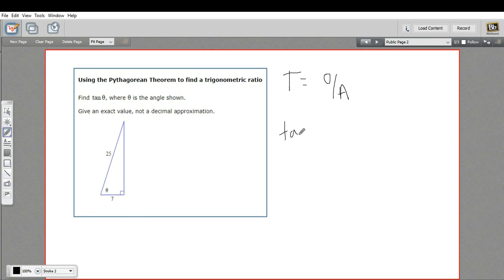So in this case, the tangent of theta is going to be the opposite side of theta, which is this side here that we don't know. I'm just going to call that x. So that's going to be x over the adjacent side, which is 7. So all we need to do is use the Pythagorean theorem to find this side.